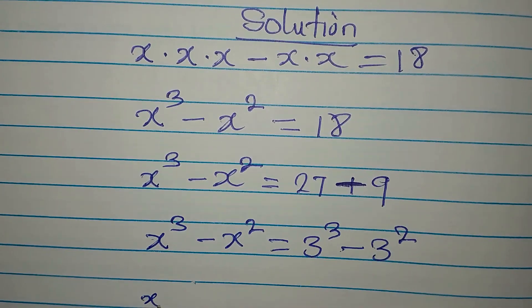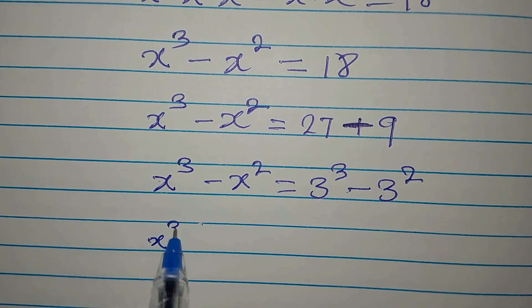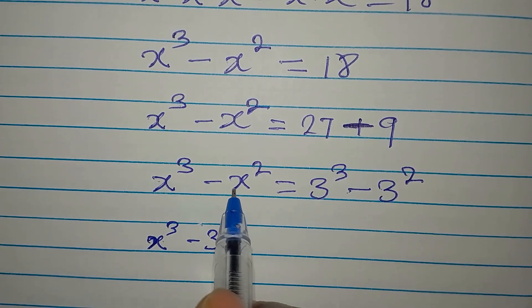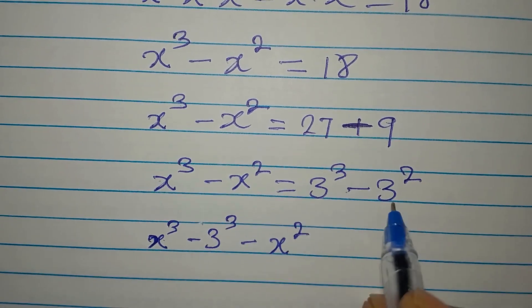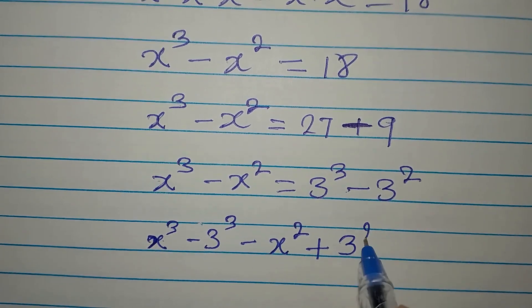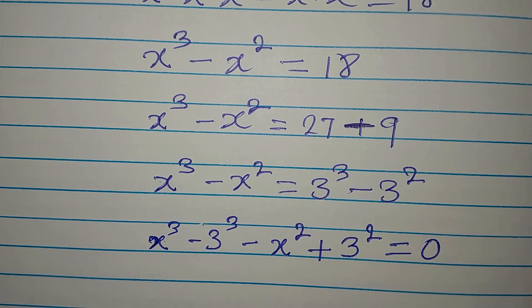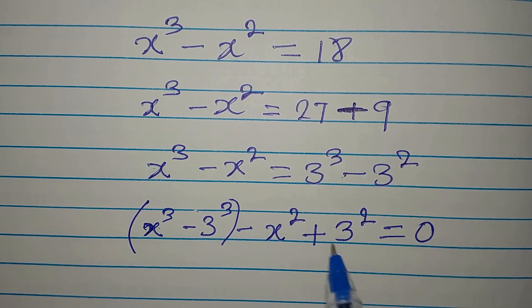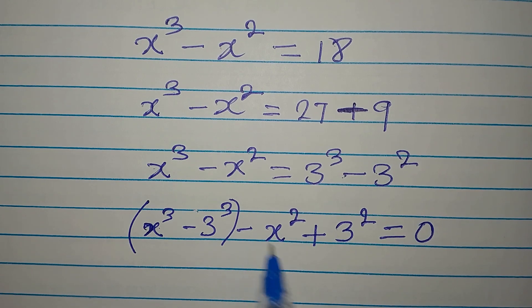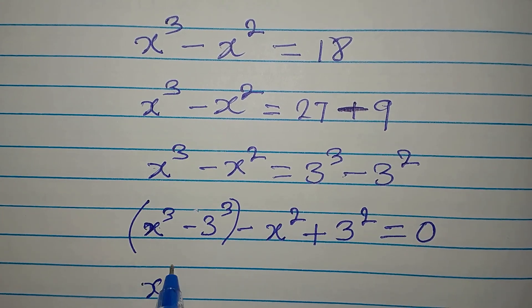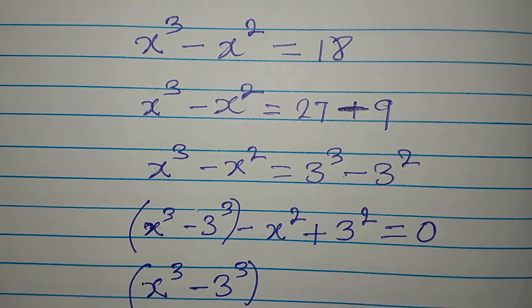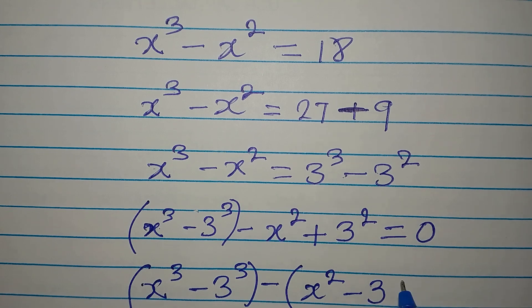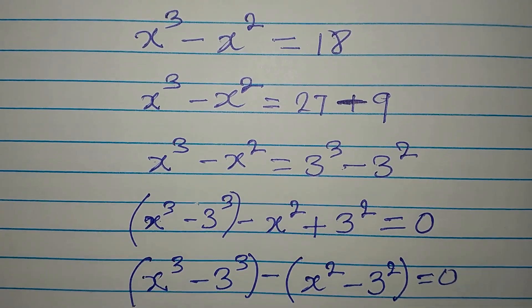We bring everything to the left: x to the power of 3 minus 3 to the power of 3, then minus x squared, and this becomes plus 3 to the power of 2, all equal to zero. To group and factorize, because of the negative sign, I write x to the power of 3 minus 3 to the power of 3, then minus open bracket x squared minus 3 squared, close bracket, equals zero.